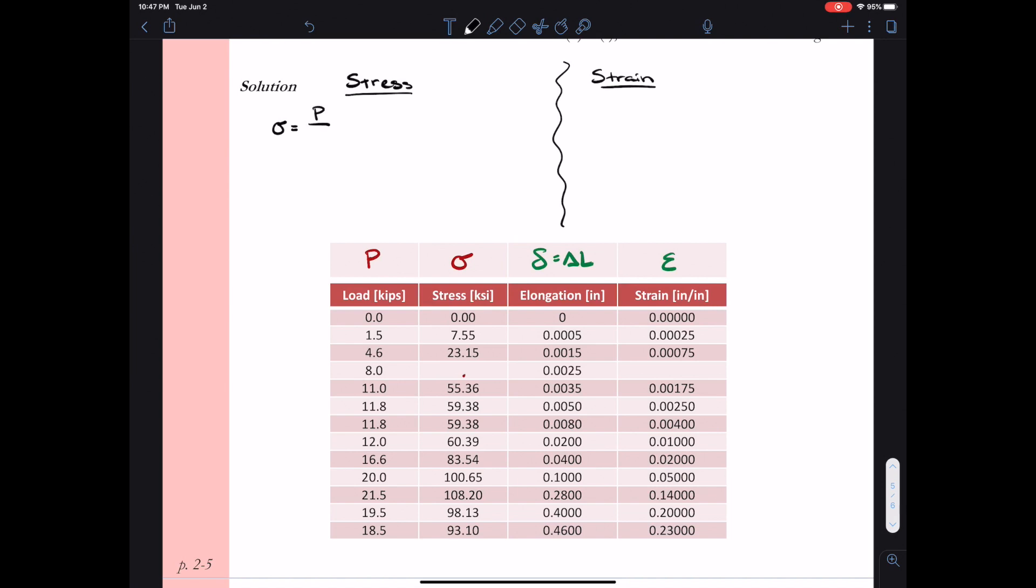Alright, so sigma, our formula is p over a zero, where a zero is our initial area. Now we're going to pretty much drop that zero from the equation as we go on through the semester. But just know that when we're talking about engineering stress, we're talking about the initial area. So if I take a look at this row of data, my load value is p, which is going to be eight kips.